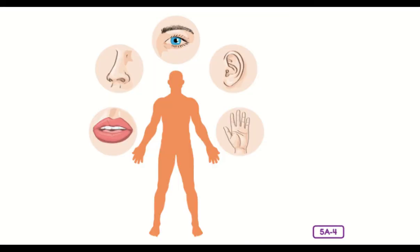Some nerve cells collect messages from parts of your body and from your environment and the world around you. These nerve cells are called receptors. Receptors collect messages through your eyes, ears, nose, tongue, and skin. Each of your five senses works with your brain to help you understand the world around you.